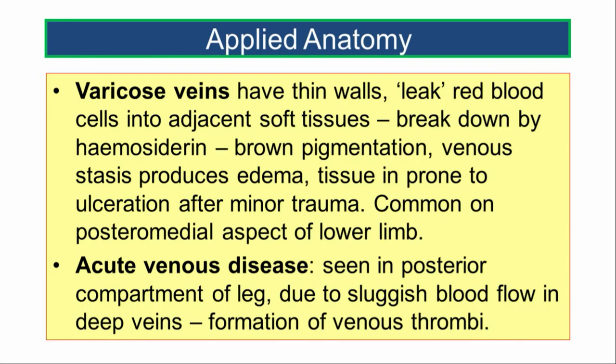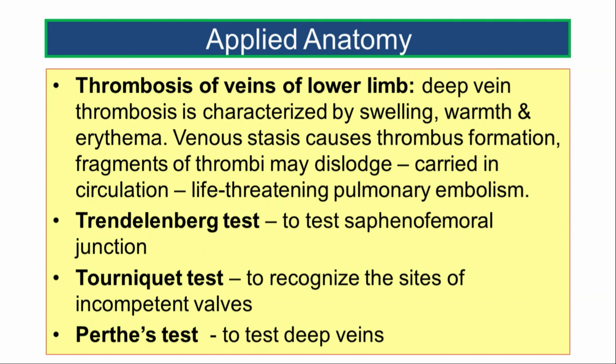Acute venous disease is seen in the posterior compartment of the leg due to sluggish blood flow in the deep veins. This sluggish flow over time gives rise to formation of venous thrombi. Deep vein thrombosis is characterized by swelling, warmth, and redness or erythema. Fragments of these thrombi may get dislodged, carried in the circulation, and give rise to life-threatening pulmonary embolism.